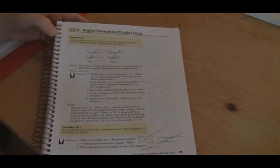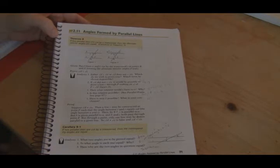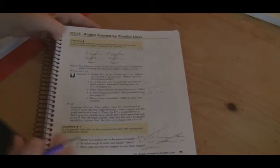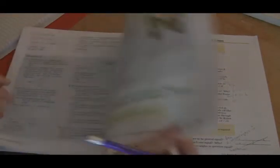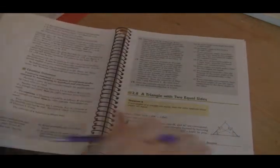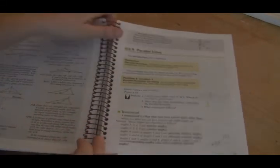Here's theorem 8. Theorem 8 says if two parallel lines are cut by a transversal, then the alternate interior angles are equal. Well, if you can't remember which terminology they're talking about, we can flip back to... oh, where'd it go? Hold on. There we are. Page 67.